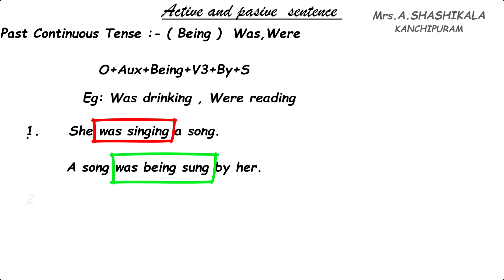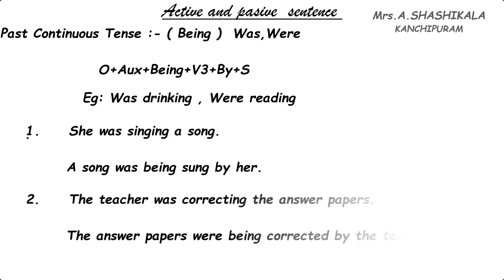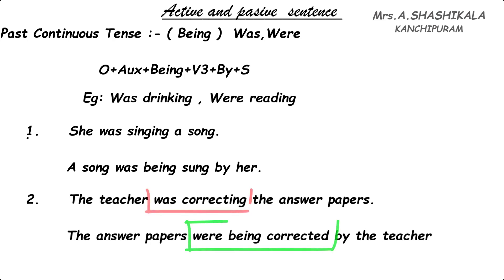See the second example: 'The teacher was correcting the papers.' The teacher is the subject, 'was correcting' is the verb, and 'the answer papers' is the object. So we are going to write the object first: 'The answer papers were being corrected by the teacher.'